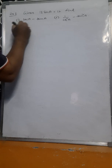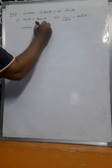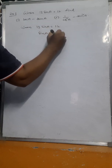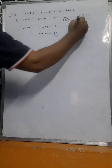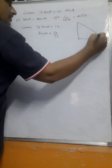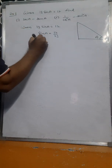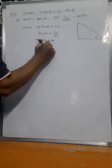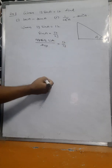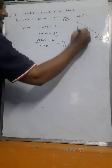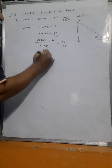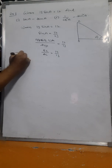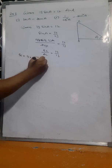Third example: Given 13 sin A equals 12, so sin A equals 12 by 13. Sine A means opposite side by hypotenuse equals 12 by 13. In triangle ABC, BC by AC equals 12 by 13, so BC equals 12x and AC equals 13x.